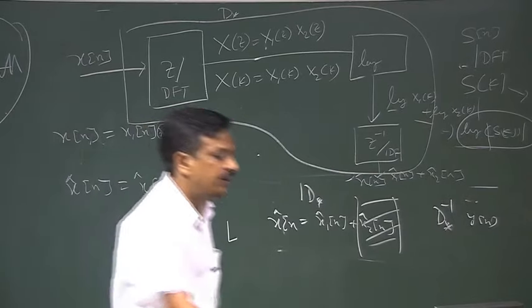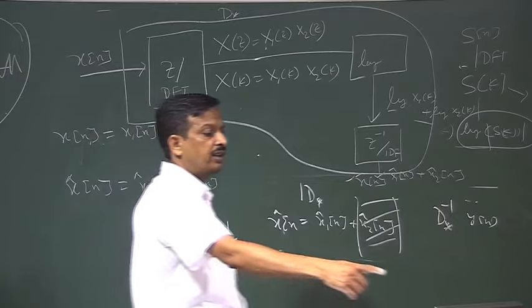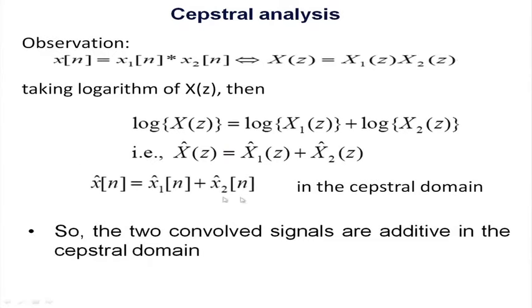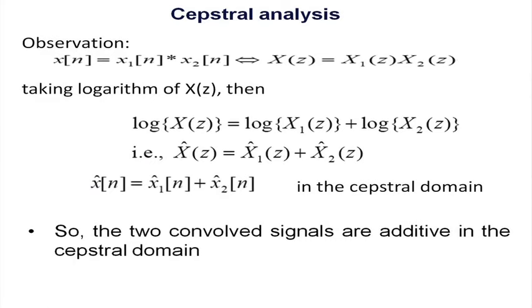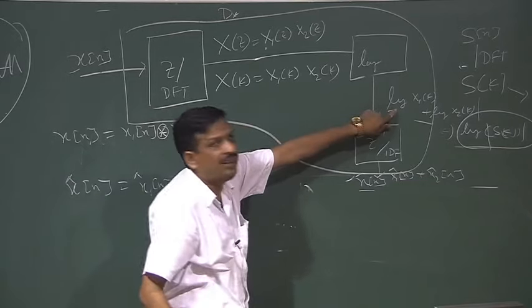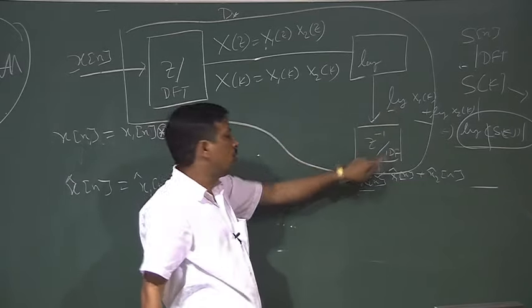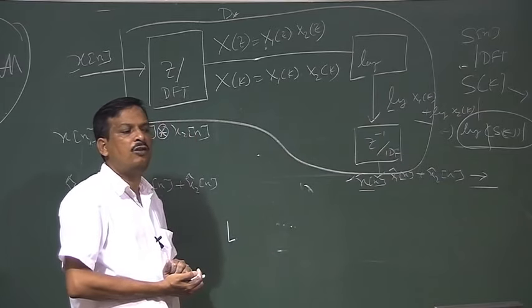If you see this slide: x(n) → Z-transform, so convolution becomes a product. Then log makes the product additive. Then I take the inverse transform back to the time domain. The same process: x1(n) in the Z-domain, take the log, take the inverse transform, and I get x̂1(n) + x̂2(n). This domain is called the cepstral domain. Note it is not exactly x(n): I am treating the log signal as a time-domain signal and taking the inverse DFT. So this domain is called the cepstral domain.